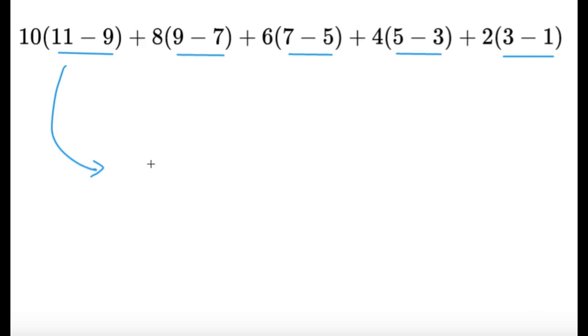So apparently we just have to do 10 times 2, that's 20. 8 times 2, that's 16. 6 times 2, that's 12. 4 times 2, that's 8. And 2 times 2, that's 4. So from a very complicated sum, we've got something a little bit more simple.